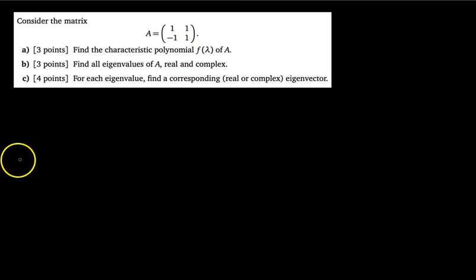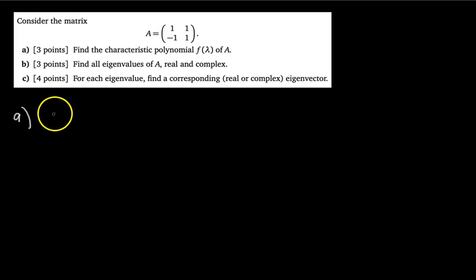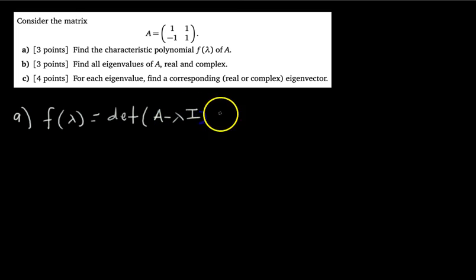So let's jump into this. Part A says find the characteristic polynomial F of lambda of A. In order to get this right, you have to know what the characteristic polynomial is. The characteristic polynomial is just the polynomial you get when you find the determinant of A minus lambda I. So F of lambda, the characteristic polynomial, equals the determinant of A minus lambda I. In this case, I is the 2 by 2 identity matrix.